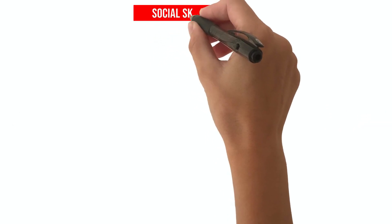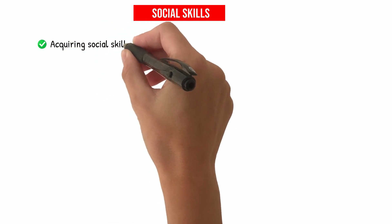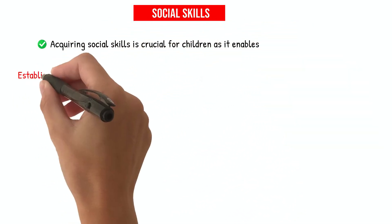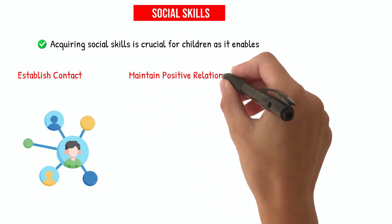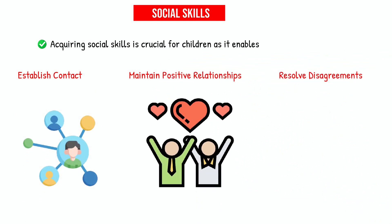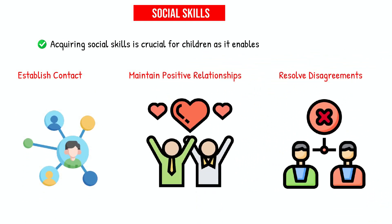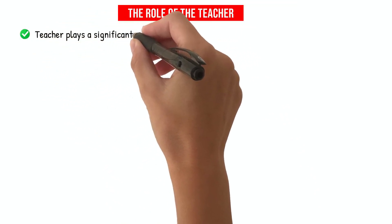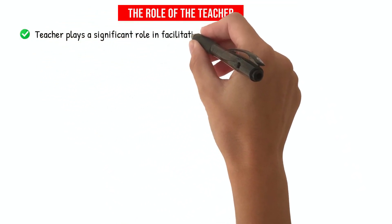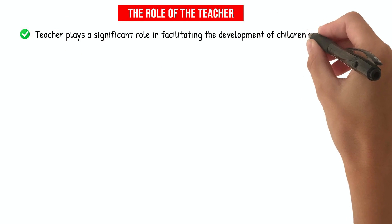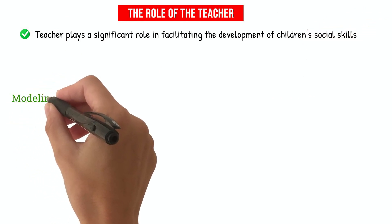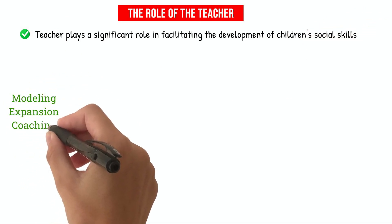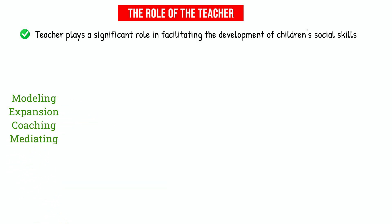Acquiring social skills is crucial for children as it enables them to establish contact, maintain positive relationships, and resolve disagreements. The teacher plays a significant role in facilitating the development of children's social skills. This is achieved through various methods, including modeling, expansion, coaching, and mediating.